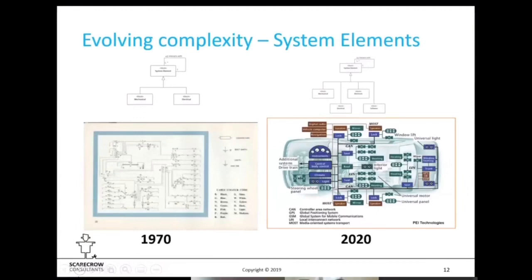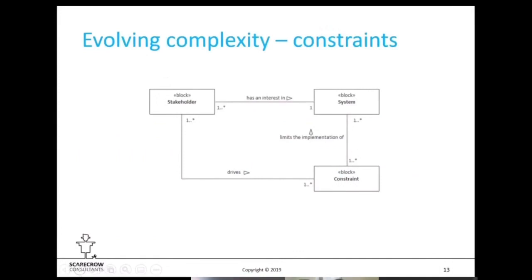The complete wiring diagram for a 1970 Triumph Herald fits on one simple diagram — headlights, indicators, starter motor, windscreen wipers. Compare that to a modern vehicle with different sensors, controller area networks, GPS, and various communication systems. Not just the number of elements but the nature of these elements has changed, leading to a massive exponential increase in complexity, particularly in the last 10 years.